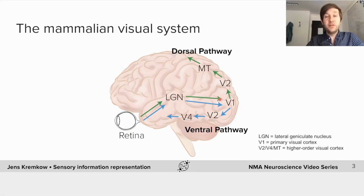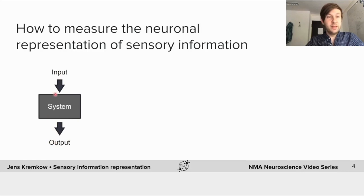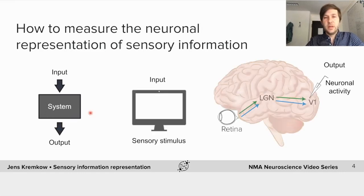How do we find out how neurons in these pathways represent sensory information? We can follow a systems approach and basically treat the brain as a black box that we want to study. A very common way of approaching this question is to provide a set of inputs, then measure the set of outputs that these inputs produce. By doing that in a systematic manner, we can slowly but steadily understand what the system is implementing and what the mechanisms are. In the visual system, the input is straightforward — a visual stimulus which we can show on a regular computer screen.